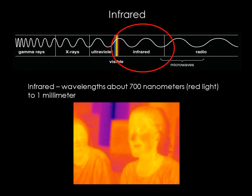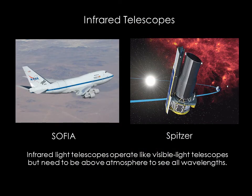Light with wavelengths somewhat longer than visible light is called infrared. Most of the thermal radiation emitted by objects near room temperature is infrared. You are emitting radiation in the infrared. Astronomers routinely look at celestial objects with infrared detectors. Infrared light is close enough to visible light that it behaves in a similar way, and infrared telescopes operate much like visible light telescopes do.